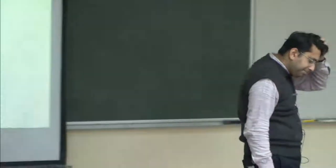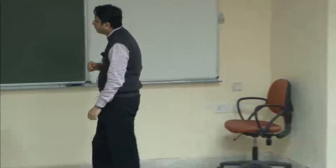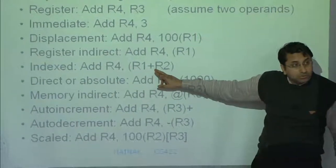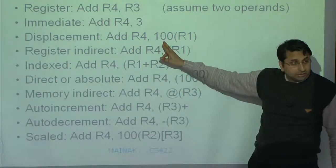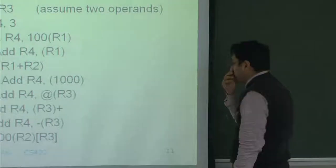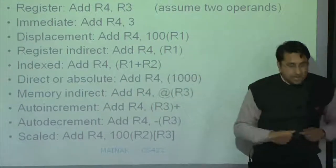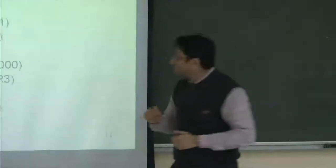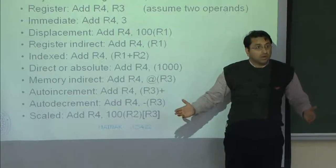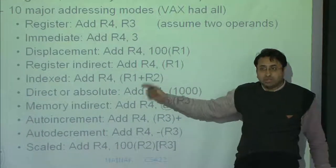A student asks: shouldn't displacement addressing also be done like index addressing, since you can store the displacement in a register? The answer is that the displacement appears as a constant in the instruction, so there are a limited number of bits for encoding it. If you want a very large displacement, you have to resort to the index addressing mode — you put the displacement in R1, the base in R2, and generate that instruction.